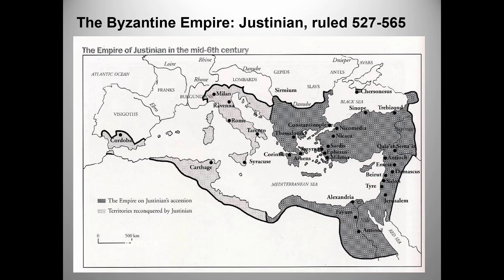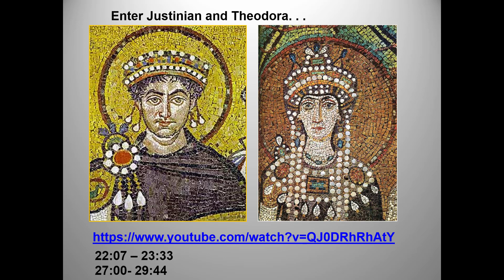Byzantine rulers were a mixed lot, but they all ruled as head of both the government and the church. The struggles between popes and kings that would define much of western European medieval history had no real parallel in the Byzantine Empire — patriarchs and bishops were important, but when emperors said jump, they pretty much asked how high. The two great Byzantine churches we will look at were both commissioned by Justinian. He and his empress Theodora, shown here in mosaics from San Vitale in Ravenna, were rather a piece of work. Let's watch two clips from a video about the Byzantine Empire.